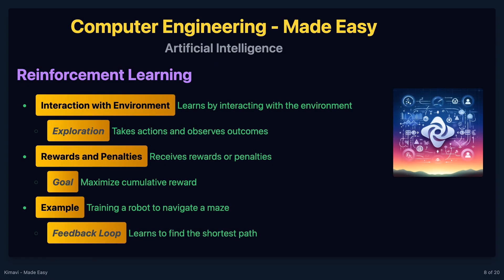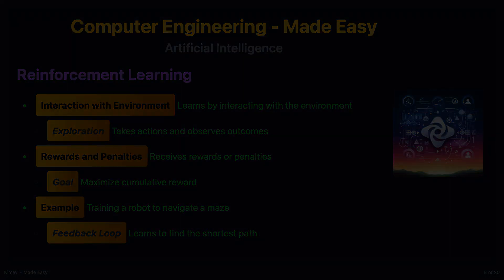In reinforcement learning, the algorithm learns by interacting with an environment, receiving rewards or penalties based on the actions it takes. The goal is to maximize the cumulative reward over time. An example is training a robot to navigate a maze.